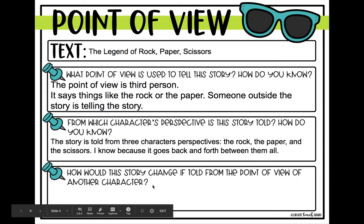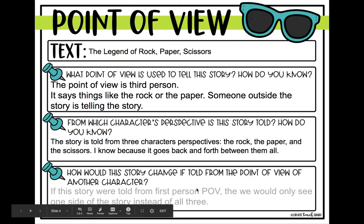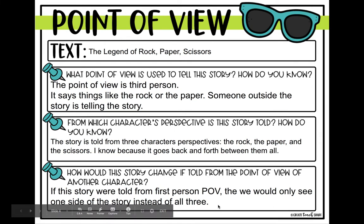Here's a tough one that's really going to make you think. How would this story change if it was told from the point of view of another character? So instead of third person, let's say it was first person and only focused on either the rock, the paper, or the scissors. If this story was told from first person point of view, then we would only see one side of the story instead of all three. If it was only told from the rock, I'm only going to hear from the rock — I won't know about the paper fighting the computer printer or the scissors fighting the dinosaur chicken nuggets. I'm only going to see it through the rock.